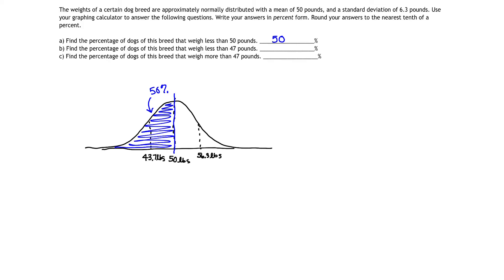47 pounds. Now, where's 47 pounds on my picture? Notice 47 pounds is about here. That's 47 pounds. And I want to know what percentage of dogs fall below 47 pounds. So I want the red shaded area this time. Well, it's not on a standard deviation, so I can't use my empirical rule.